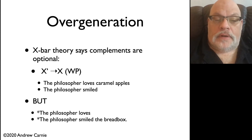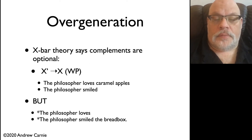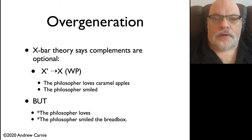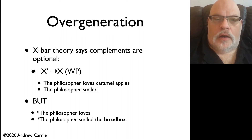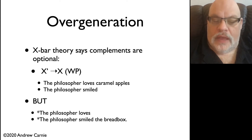Similarly, you can't put an object on a sentence with the verb smiled. So while you can say the philosopher smiled, you can't say the philosopher smiled the bread box. This seems to be information about the specific verb that is involved. The lexical information here seems to be determining what items can be present and what items may be omitted. So we need a way to make sure that our rule doesn't over-generate and generate those ungrammatical sentences.